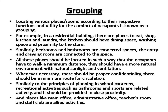Grouping refers to locating various rooms according to their respective functions and utility for the comfort of occupants. In a residential building, the kitchen should have dining space, washing space, and proximity to the store; bedrooms and bathrooms are connected spaces; and the entry and drawing room are connected. All these places should be located so that occupants walk a minimum distance, with natural sunlight, ventilation, proper privacy, and minimum circulation routes. Similarly, in schools, recreational spaces and canteens should be in close proximity, while main offices, administrative offices, and staff rooms are grouped as allied activities.